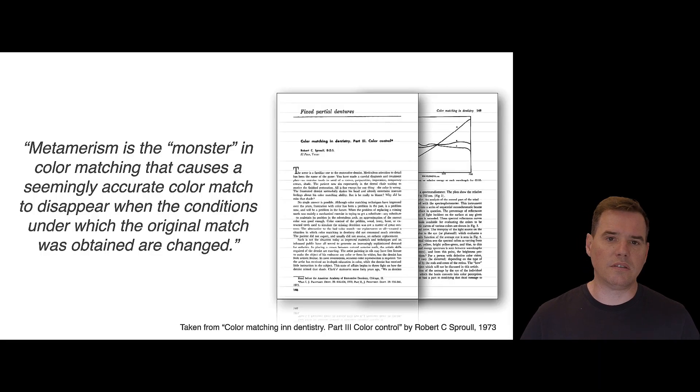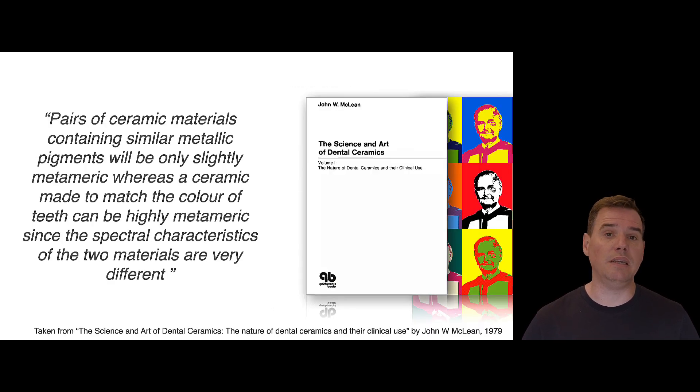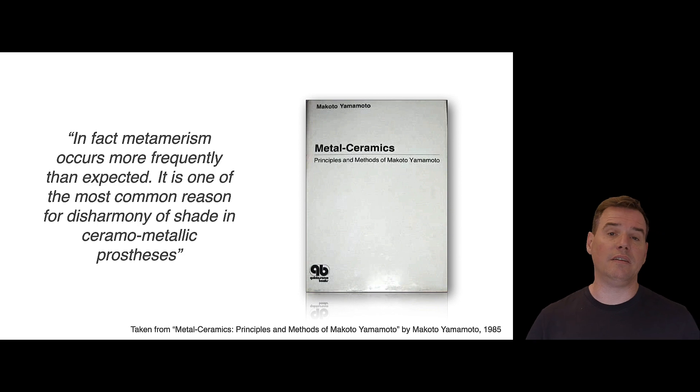So early authors and pioneers in the field of aesthetic dentistry have recognized the importance of metamerism. So this is Robert C. Sproul here, for instance, who in 1973 wrote that metamerism is a monster and that it has the ability to destroy a perfectly good color match when the light situations are changed, when the color temperature of the light sources change. John McLean argued that the reason for this must be the different chemical composition that we have between natural teeth and indirect restorations. And the late Makoto Yamamoto was of the same opinion, and he argued that you always have illuminant metamerism between artificial restorations and natural teeth for this reason, the difference in chemical composition.